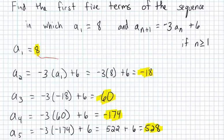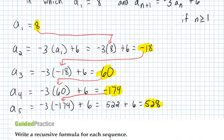You'll notice that 8 got plugged in for A sub 1. Negative 18, we had to use that when finding A sub 3. 60, which was A sub 3, we had to use that to find A sub 4. And negative 174, we had to use that to find A sub 5. So it's always the previous term. If we're finding A sub n plus 1, then the previous term is A sub n.